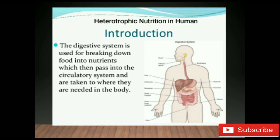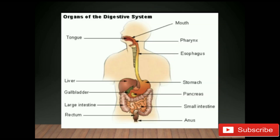The digestive system is responsible for taking whole foods and turning them into energy and nutrients to allow the body to function, grow, and repair itself. The organs of the digestive system are: mouth, tongue, pharynx, esophagus, stomach, liver, pancreas, gall bladder, small intestine, large intestine, rectum, and anus.